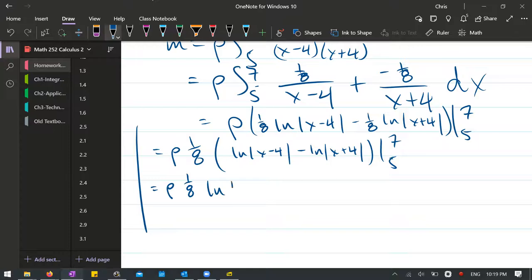5 minus 4 is 1, and of course, ln of 1 looks really bad when I write absolute value of 1. It looks like ln of 111. Just ln of 1 minus ln, 7 plus 4 is 7. Wait, 5 plus 4 is 9. Now we're going to be using the 7. 7 minus 4 is 3. Minus ln, 7 plus 4 is 11.